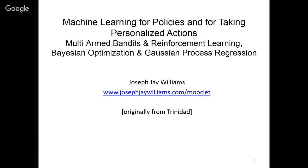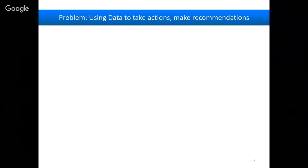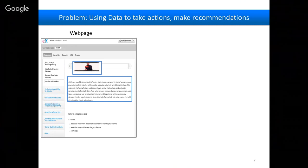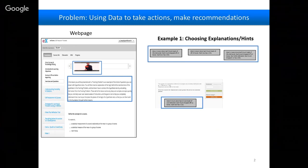At a high level, the key idea is: how do we bring machine learning in to discover how to take personalized actions? There's lots of machine learning about how to personalize — that's what recommender systems are often about — but how do we actually discover it? The problem here is how do we use data to take actions and make recommendations. For example: which video do we show people, which explanation to present, which hint to give for a math problem, which motivational message, which email to send?